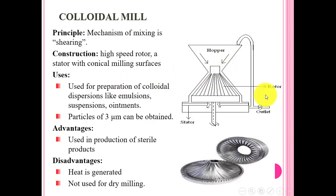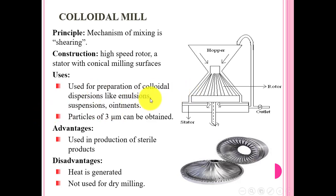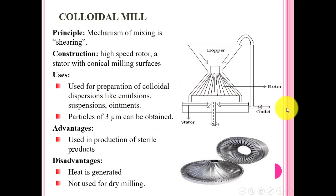The colloidal mill is used for the preparation of colloidal dispersions like emulsions, suspensions, and ointments. Suspensions and ointments may contain more than 50% soluble or insoluble material; they must contain oil and water. Ointments are very viscous dosage forms containing solid and liquid. The particle size obtained by this instrument is about 3 microns. This is the outlet and this is the lid — the outlet of the mixing.